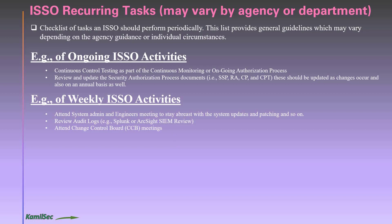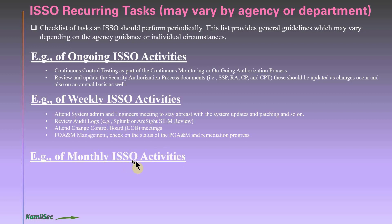Attend Change Control Board (CCB) meetings. Whatever changes are being proposed — provisioning a new server, decommissioning a server, or major upgrades — you need to be there to assess how those changes will impact your overall security posture. Also, do a weekly POA&M management check: reach out to the system team to see where they stand on open items and whether they are on track to close POA&Ms before the due date.